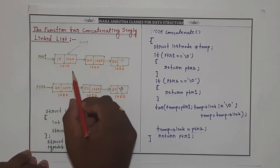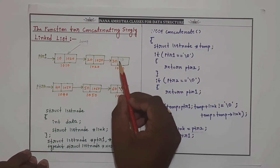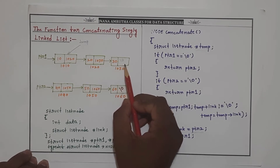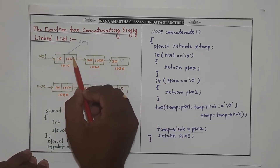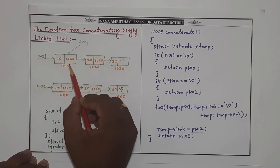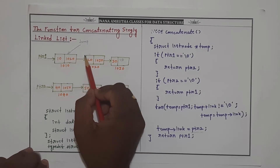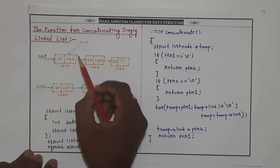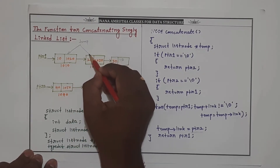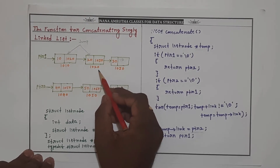We need to traverse to the end of list 1 using the temporary variable. Initially temp is pointing to PTR1. We move by executing temp equal to temp of link. We check whether temp of link is equal to null — it is not, so we move temp to the next node. Now temp is pointing to address 1020.